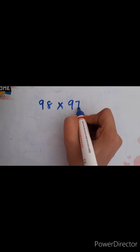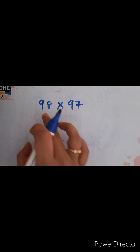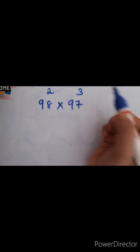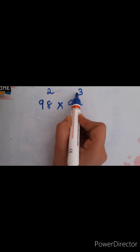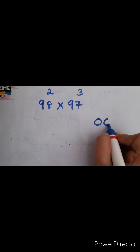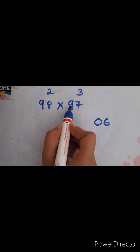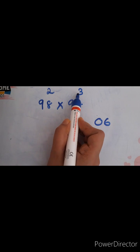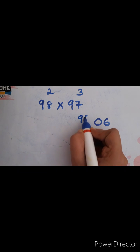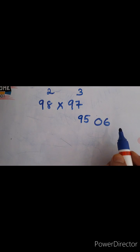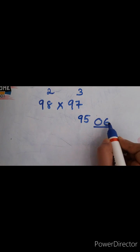Next: 98 into 97. These are very close to 100. So 98 plus 2 gives 100, and 97 plus 3 gives 100. Multiply 2 and 3 — that gives 6. Since 6 is a one-digit number, write it as 06. Then subtract: 97 minus 2 equals 95, or 98 minus 3 also equals 95. So your answer is 9506. Don't forget to write the 0 if it is a one-digit number.